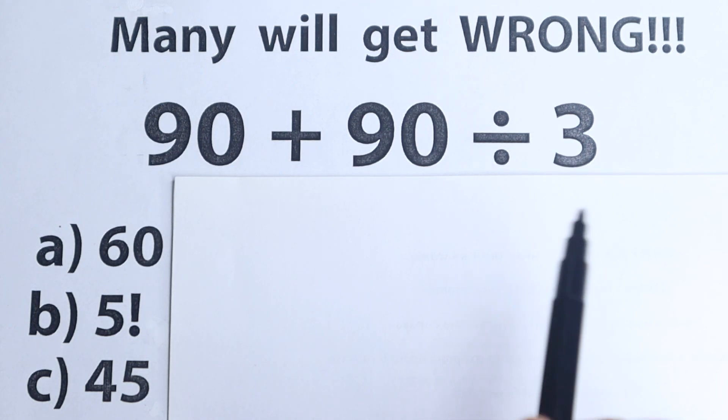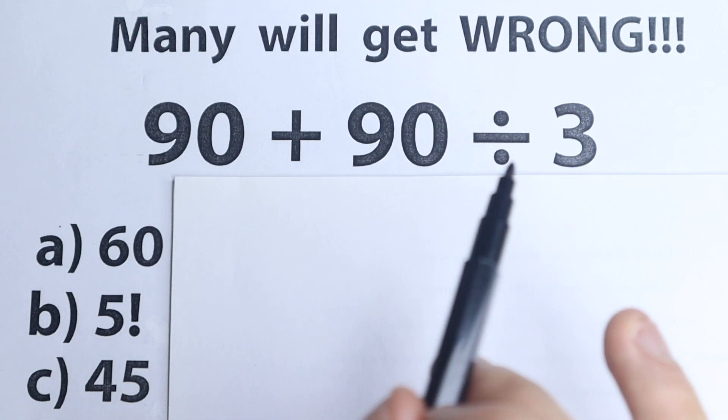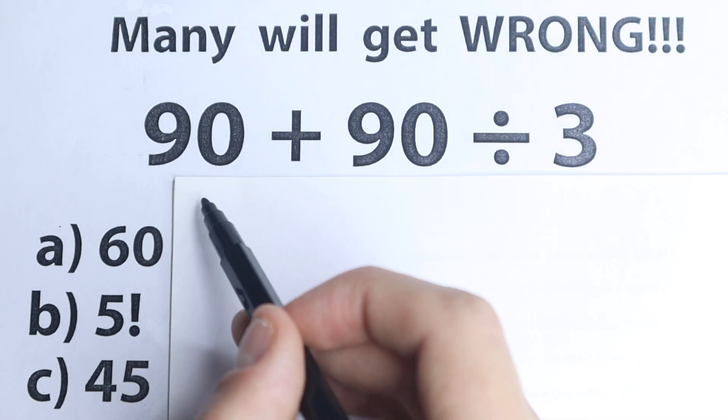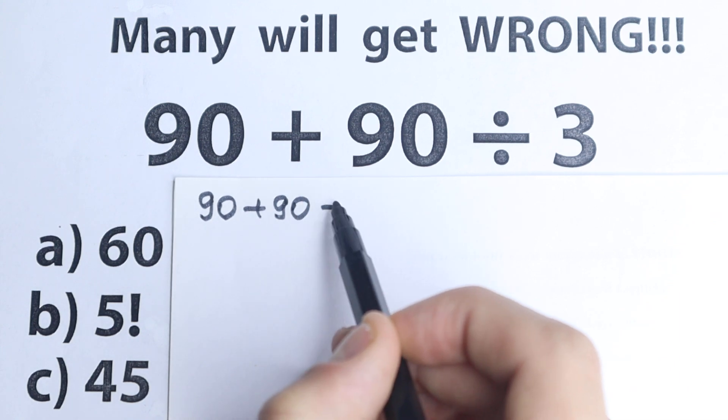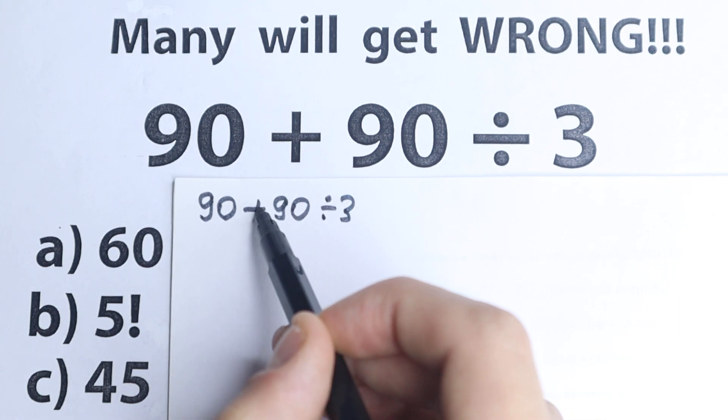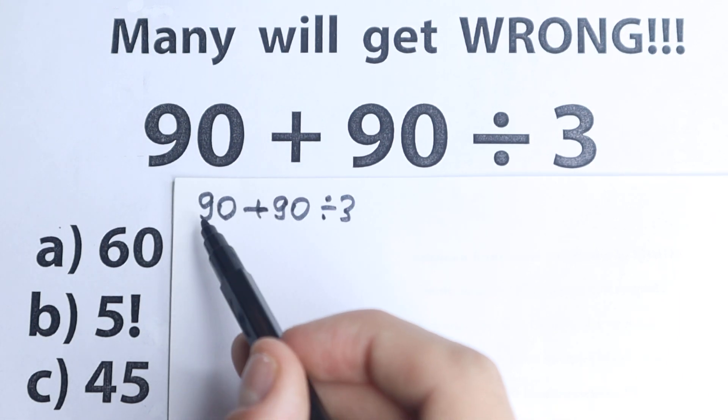But before solving this problem I want to write this solution and I'm not going to tell that this is correct or incorrect. I have this question: 90 plus 90 divided by 3. I don't want to tell if this is correct or incorrect, but a lot of students can solve it like that.